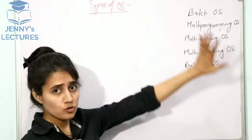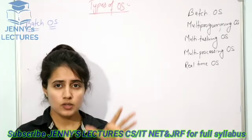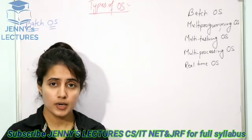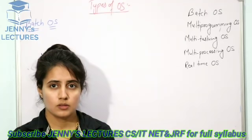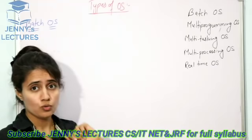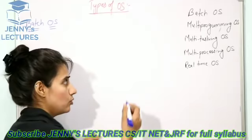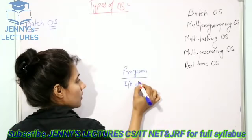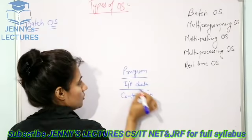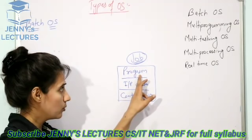First is batch operating system. As the name suggests, think of a class of 60 students — for theory all 60 are together, but for lab class you are divided into batches of 30. Similarly in this operating system, we don't have students, we have jobs. A job is a program plus input data plus control instructions. When you study batch operating system you will always find the word 'job', not just 'program'.